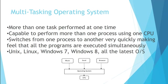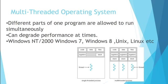Multitasking — doing more than one task at one point of time is called multitasking. A multitasking operating system allows various applications to run simultaneously. For example, you can have music being played, Excel open, and a browser also open — all working simultaneously. Actually, the operating system or processor moves from one task to another so quickly that you feel all three tasks are performed simultaneously. Examples include Unix, Linux, Windows 7, Windows 8, and all the latest Windows versions we use nowadays.